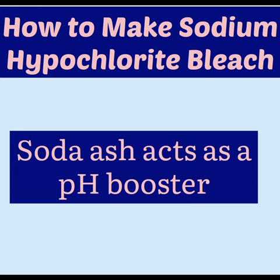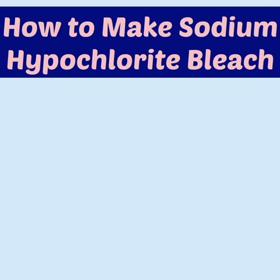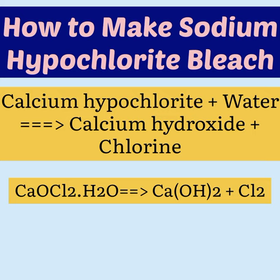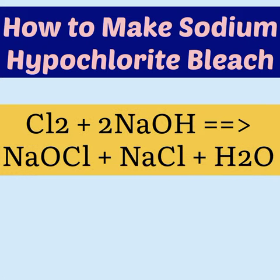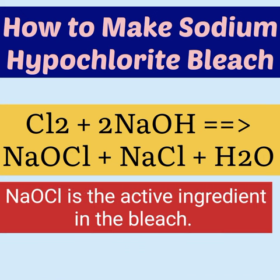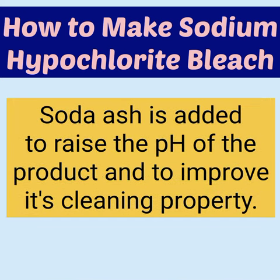Now let's see the reactions that are going to be involved in this preparation. The first reaction is the reaction of calcium hypochlorite with water — it will split into calcium hydroxide and chlorine. The second reaction is the liberated chlorine reacting with the caustic soda to yield sodium hypochlorite, which is the active agent in the bleach. The soda ash is mainly going to be added to elevate the pH of the product so as to improve its cleaning properties.